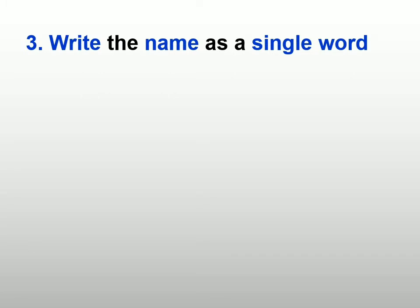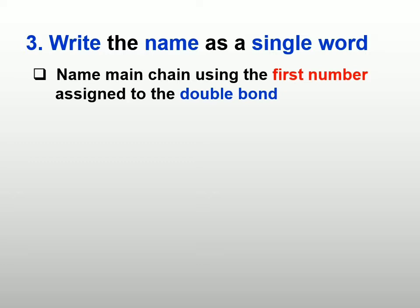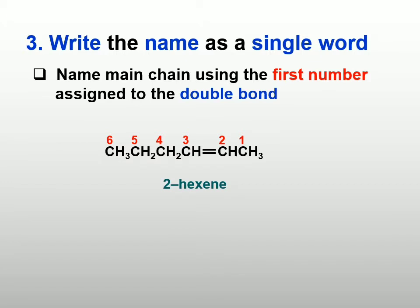Step number 3, we are going to write the name as a single word. Name the parent chain using the first number assigned to the double bond — the position of the double bond must always be labeled. So if the double bond is at carbon 2, the parent will be 2-hexene. Remember, you must always include the numbering for the position of the double bond — so 2-hexene.